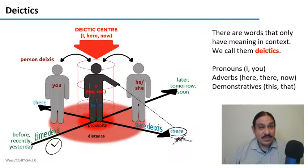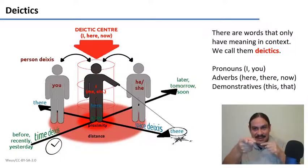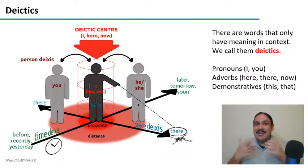There's adverbs, for example, space adverbs, adverbs that refer to things like here, there, that only have a meaning once we know what here and there are.